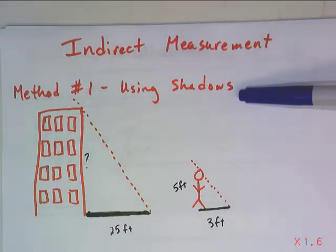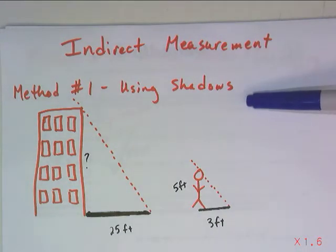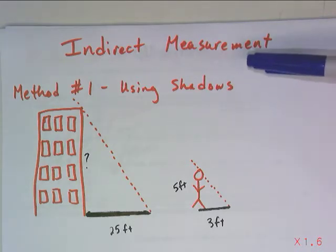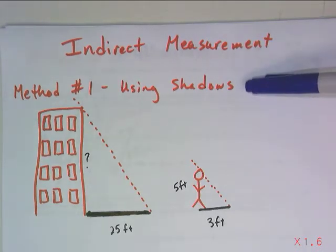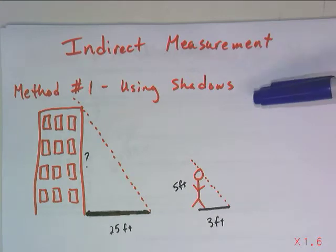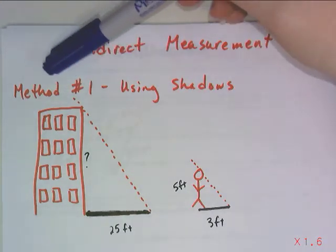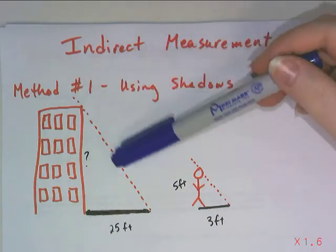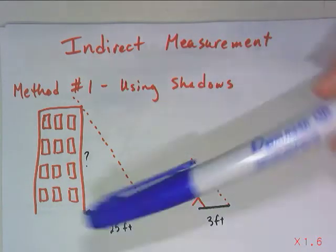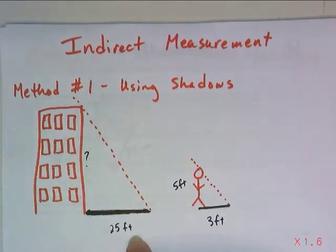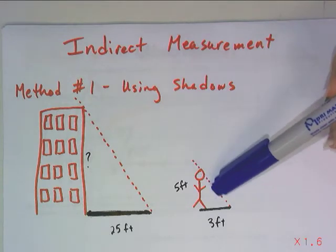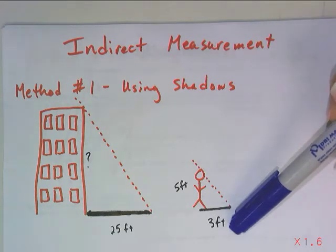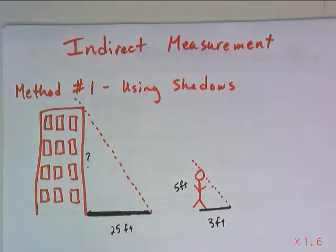The first method that we're going to talk about is using shadows. So let's say at a certain time of day, the sun is out, it's not covered by clouds, and whatever direction the sun is in and shining down on this building that we want to measure, it's causing the building to cast a shadow. And that shadow is 25 feet long. At that exact same time of day, a 5 foot tall person is casting a shadow at 3 feet.